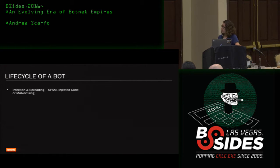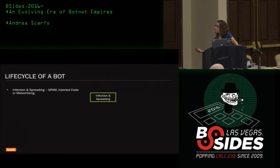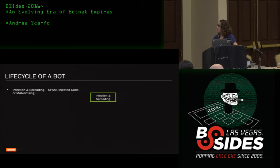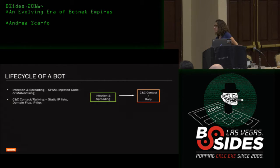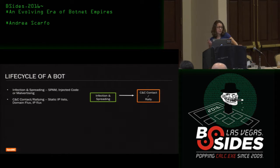The life cycle of a bot starts with infection and spreading. What they use for infection: they use spam, initiating a spam campaign and sending malicious attachments to lead to the download of the bot, or through injected code on a compromised website leading to an exploit kit, and also through malvertising with malicious ads. From there, a bot needs to make contact with the command and control server, using different rallying techniques. Less common is a static IP list in a config file, since it's easy to figure that out, so they've moved more toward using domain flux.